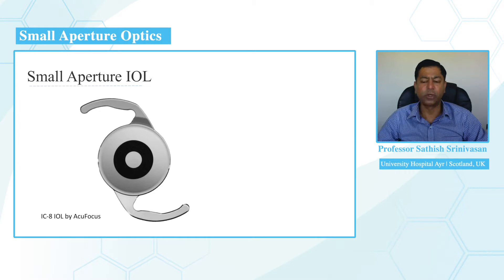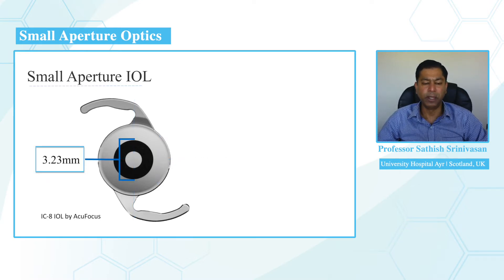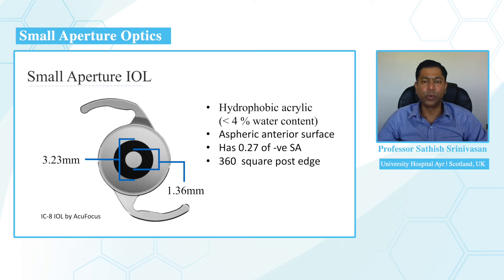The IC8 is a small aperture intraocular lens manufactured by AcuFocus, based in California. It is similar to a standard monofocal IOL — a single-piece hydrophobic acrylic lens with modified C-loop haptics. It has a 6 millimeter optic and an overall diameter of 12.5 millimeters. At its center is a mask measuring 3.23 millimeters with a central aperture of 1.36 millimeters simulating an artificial pupil. It features an aspheric anterior surface, 360-degree square edge to reduce posterior capsule opacification, and 0.27 microns of induced negative spherical aberration to counteract positive spherical aberration from the human cornea.